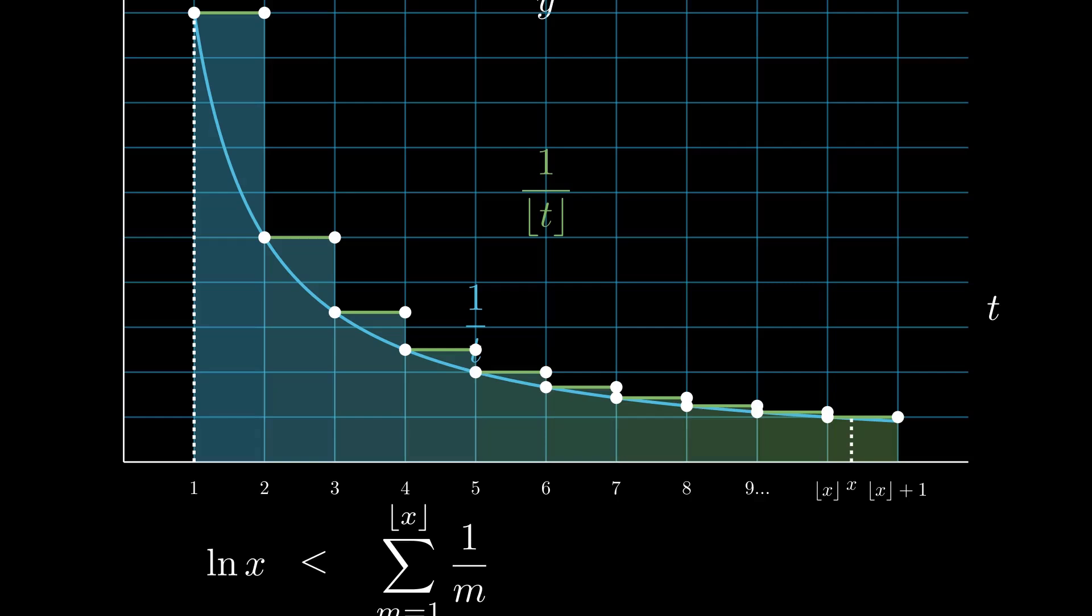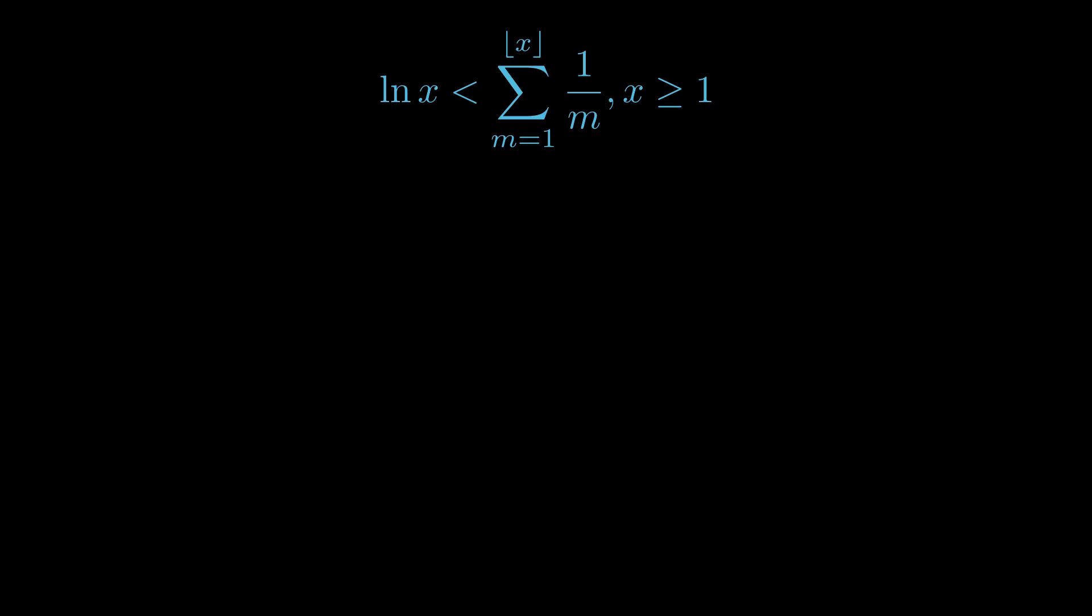We now have a useful inequality that will help us in the next phase of this proof. Since we are convinced that this inequality holds for all x greater than or equal to 1, we can choose x as 3.5, where we have the floor of x equal to 3.